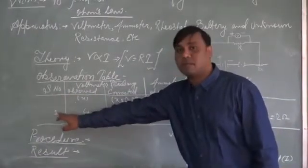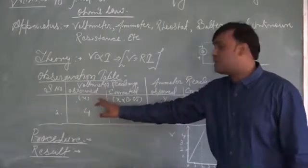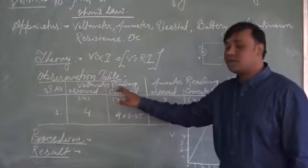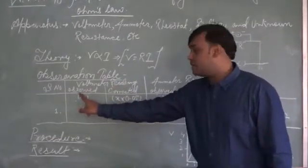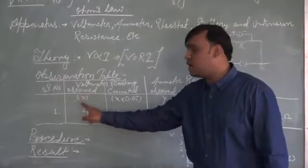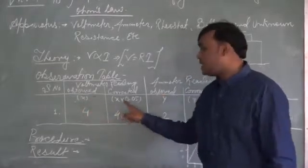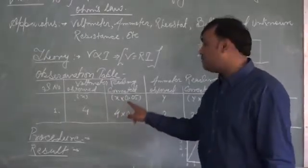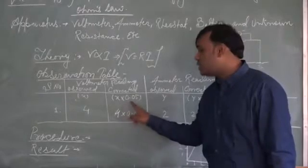In the observation table, the first column will be the serial number. The second column is split into two parts for the voltmeter reading: first we record the observed reading — the original reading taken from the device — and then we correct it by multiplying with the least count, which is 0.05.